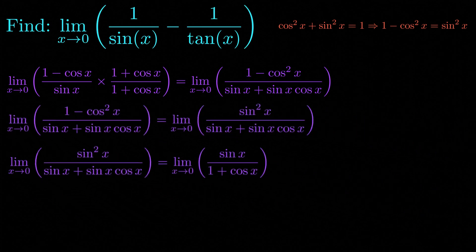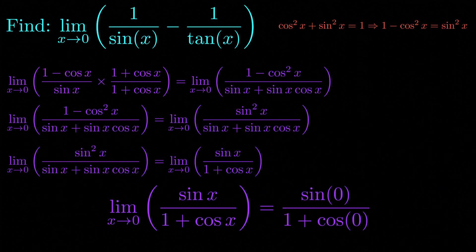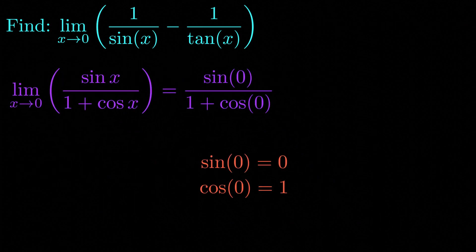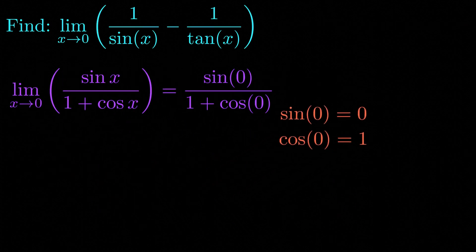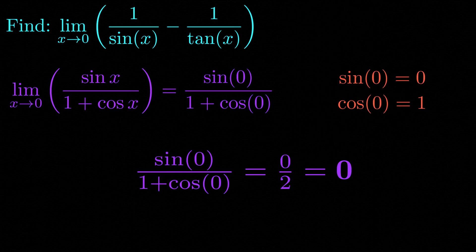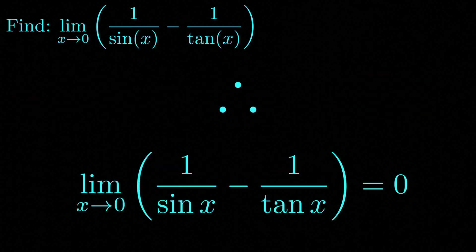Now we can plug in x equals 0: sine of 0 divided by 1 plus cosine of 0. Since sine of 0 is equal to 0 and cosine of 0 is equal to 1, we get 0 divided by 2, which equals 0. Therefore the limit as x approaches 0 of 1 over sine of x minus 1 over tangent of x is equal to 0, and that's the final answer.